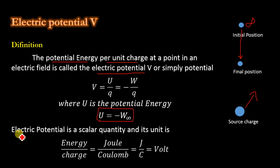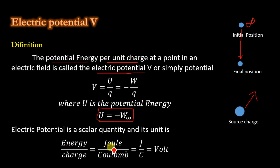Electric potential is a scalar quantity and its unit is energy divided by charge — U divided by Q — equal to joule per coulomb, which is equal to volt. So the unit of electric potential is volt.